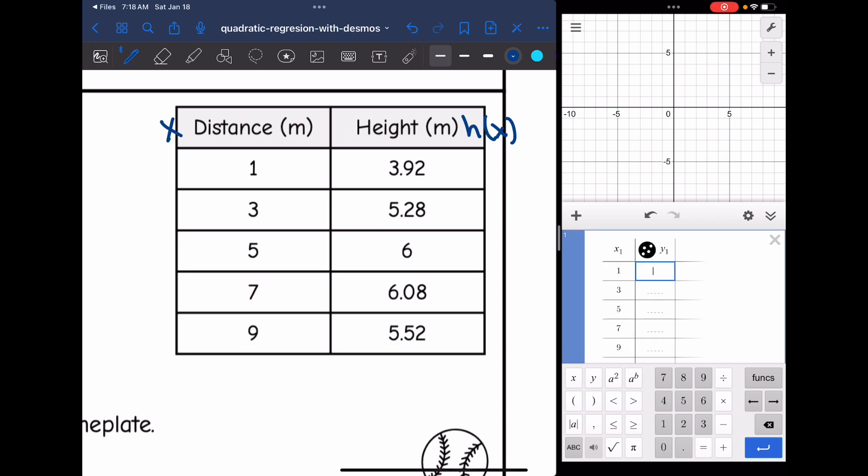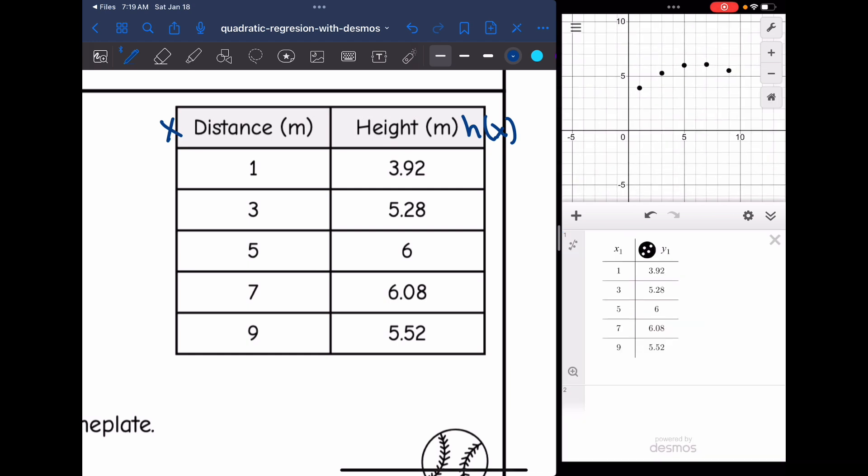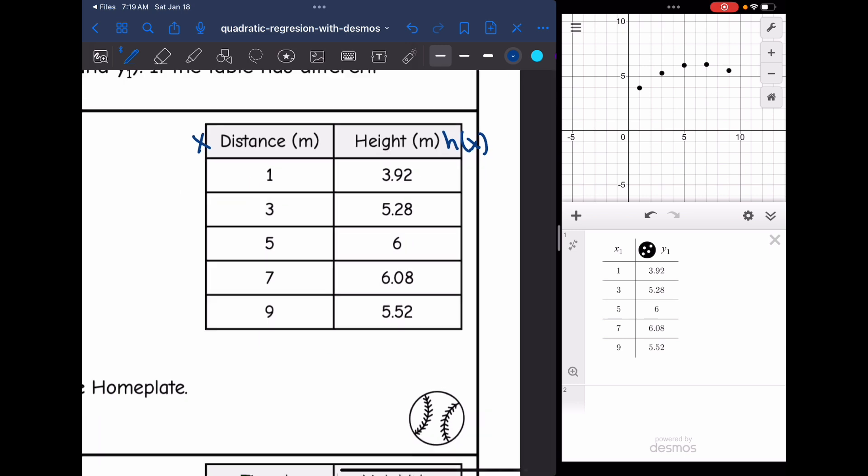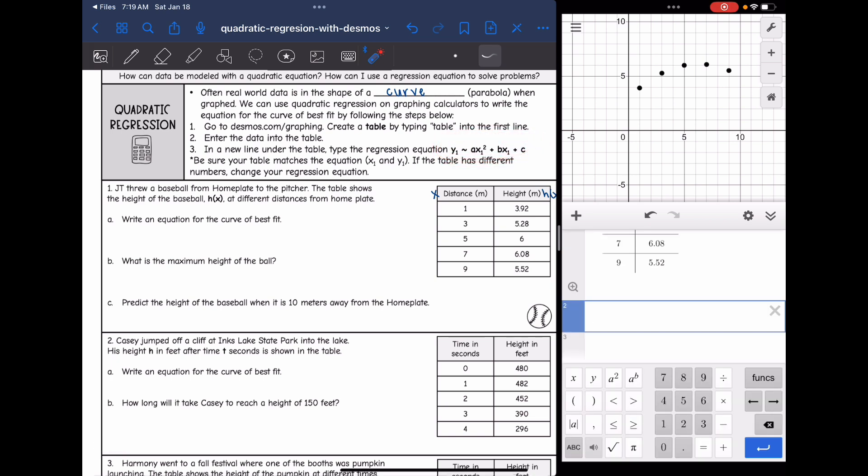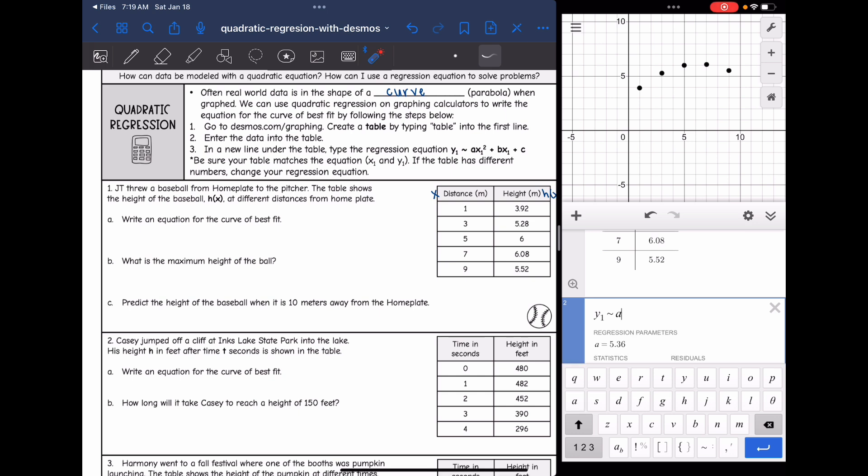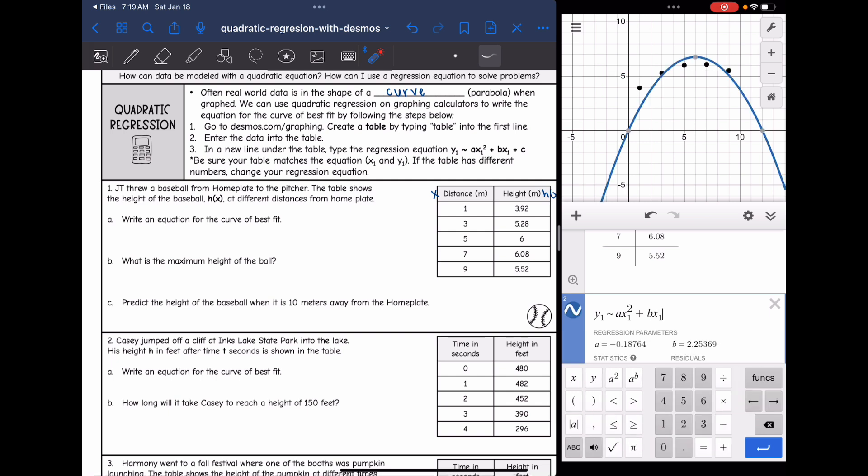Okay, and then let me enter in my output values. And Desmos plots these points. You can see it kind of looks like the top of a parabola. So quadratic regression is going to be best for this. So now I'm going to type the regression equation into the second line on Desmos.